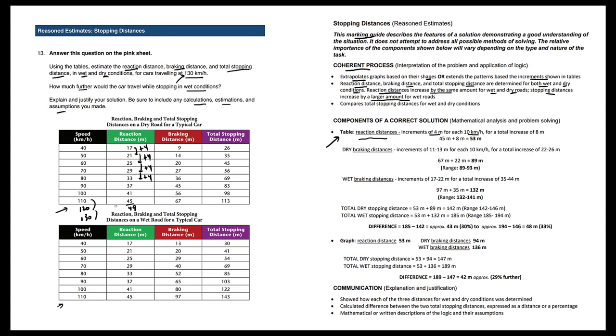45 plus 4 is 49. 49 plus 4 is 53. So as you can see, the reaction distance is 53 meters.